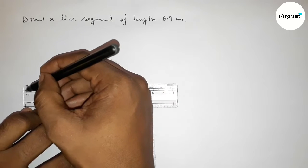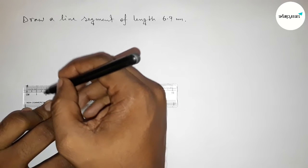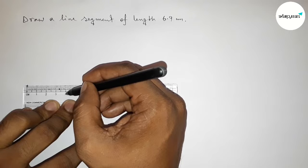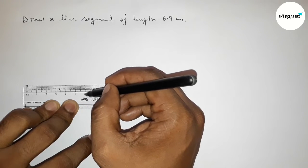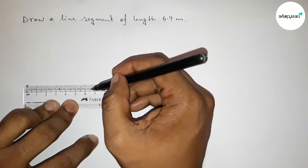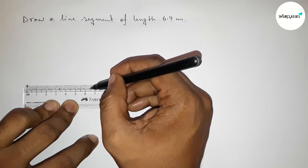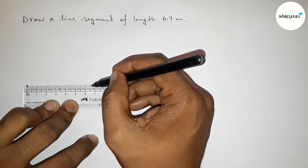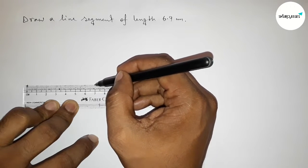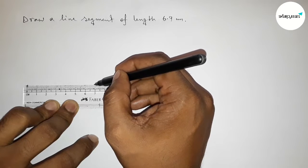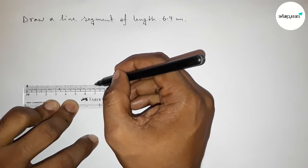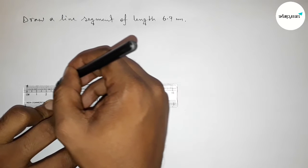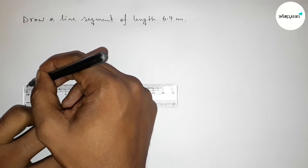Now counting: zero, one, two, three, four, five, six — and this is six point five. Continuing: six point six, seven, eight, nine — so this is 6.9 centimeters. Marking 6.9 centimeters.